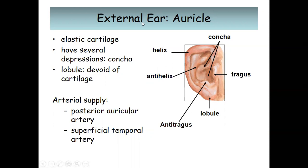The auricle is made of elastic cartilage and has several depressions. The lobule is the part of the auricle devoid of cartilage, while the remaining part is elastic cartilage, making it very elastic. The arterial supply to the auricle is from the posterior auricular artery and the superficial temporal artery.